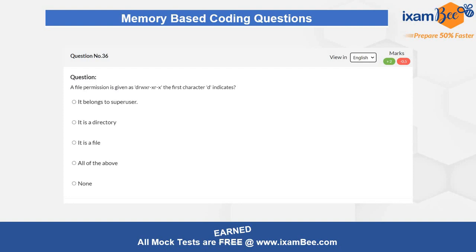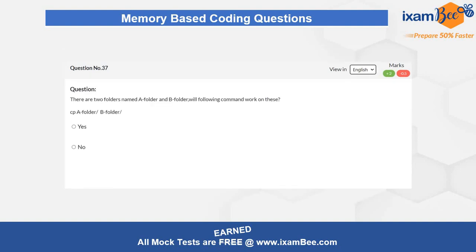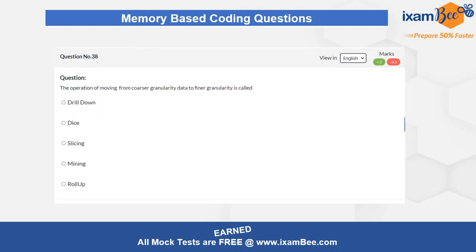Question 36 is related to file permissions — given a certain permission on a file, what operations can be performed, and what does 'd' indicate: is it a super user, directory, or something else? Question 37 involves checking a particular command and answering whether it returns true or false, or yes or no. Question 38 is on data warehousing concepts — drill down, dicing, slicing, mining, and roll up — identify which concept is being described.